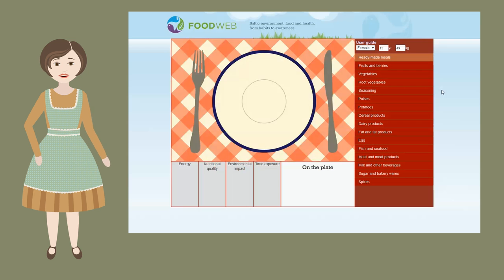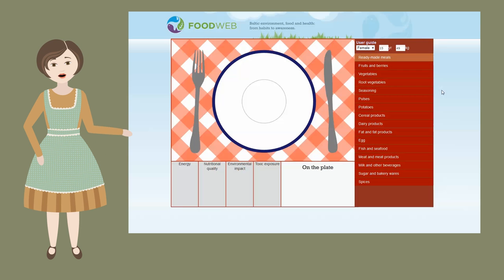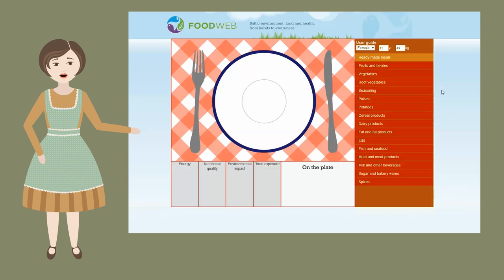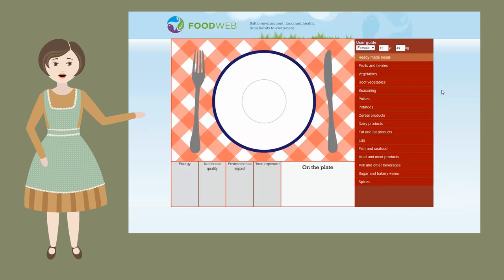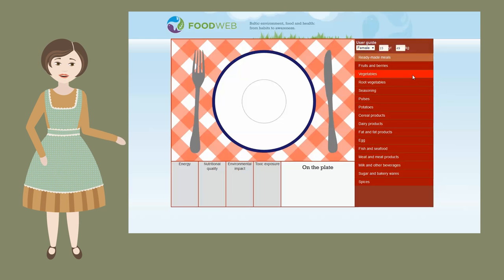You can see an empty plate in front of you. There are food item groups on the right side and indicator bars below. There is a link to the user guide and the user data up on the right side.